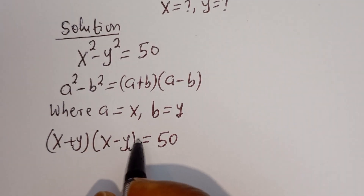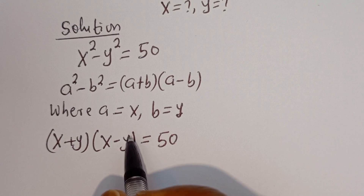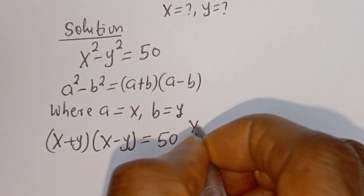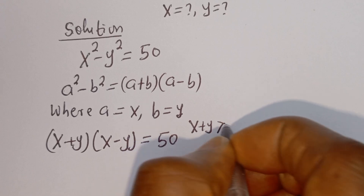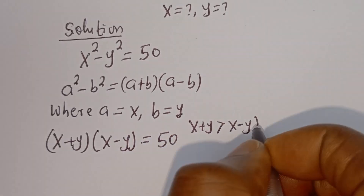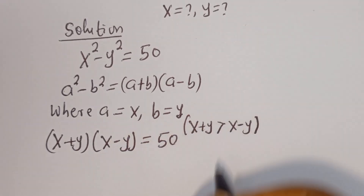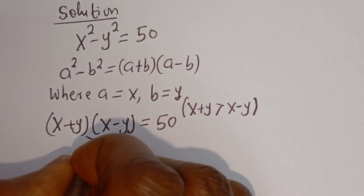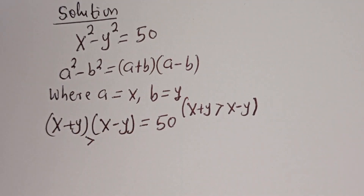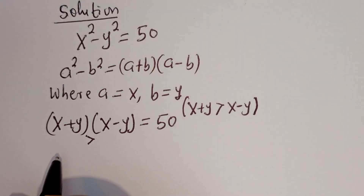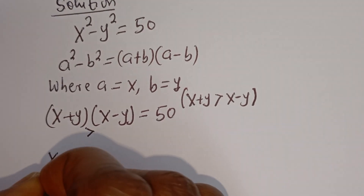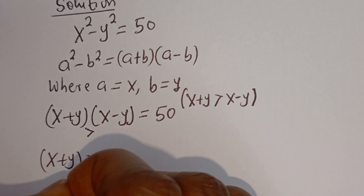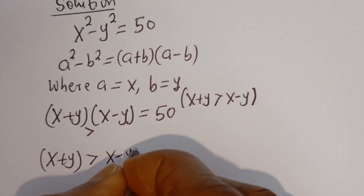From here, x and y are members of the natural numbers. So x plus y is greater than x minus y. Therefore, this means (x+y) is greater than (x-y), and their product equals 50.